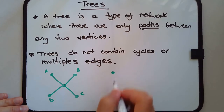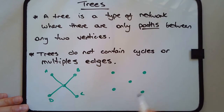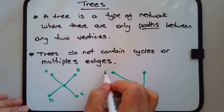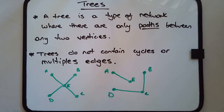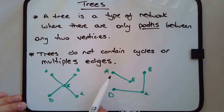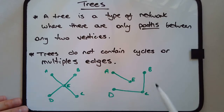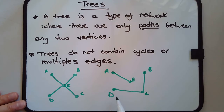Let's draw another — five vertices: one, two, three, four, five, with edges connecting them. Is this still a tree? Yes, it is. It's not a connected tree, though. We talked about connected and disconnected networks. This is an example of a non-connected tree. There's only one way to go from A to E, and from B to C or B to D there's only one way as well. So this is still a tree, but it's not what we call a connected tree.